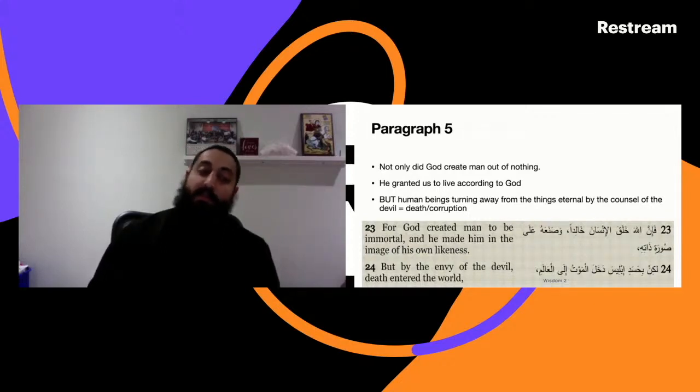There is a verse in Wisdom chapter 2: For God created man to be immortal and He made him in the image of His own likeness, but by the envy of the devil death entered into the world. Quite similar to the prayer of reconciliation in the St. Basil liturgy: O God the great, the eternal, who formed man in incorruption, death entered into the world through the envy of the devil. You have destroyed by the life-giving manifestation of Your only begotten Son our Lord God and Savior Jesus Christ.